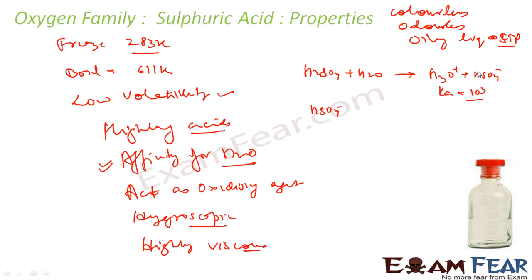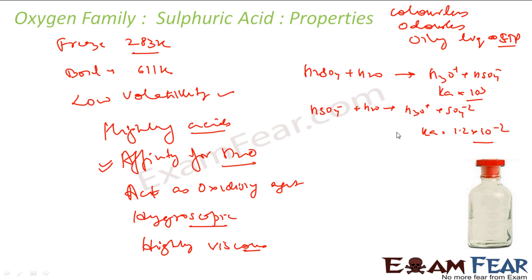If you take HSO₄⁻, it will again react with water and give hydronium ion and sulfate ion. But the Ka here is less — approximately 1.2 × 10⁻². This means the first reaction is much more favorable than the second. HSO₄ dissociates immediately, while HSO₄⁻ is comparably more stable.